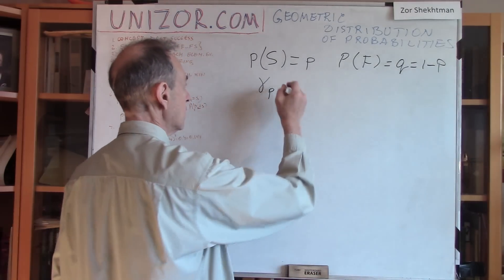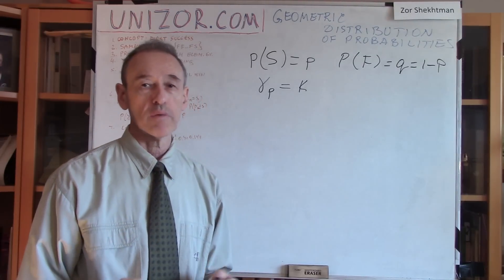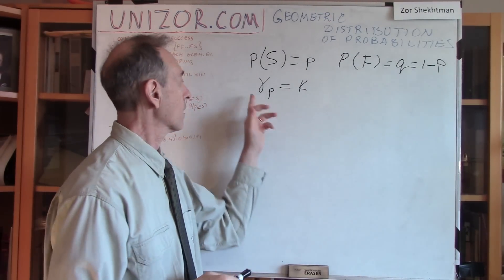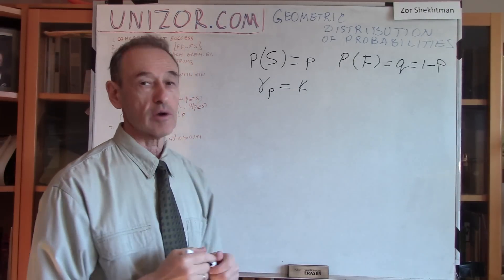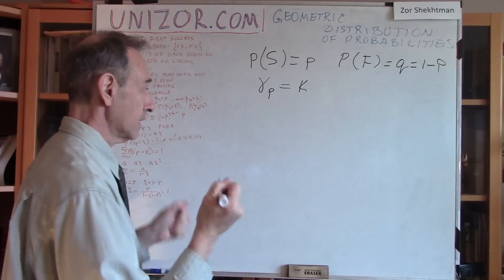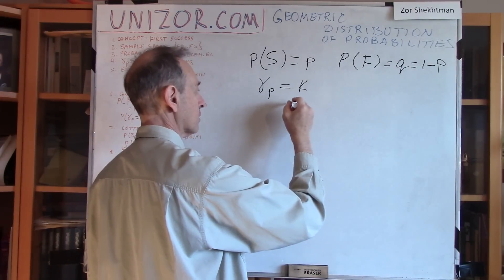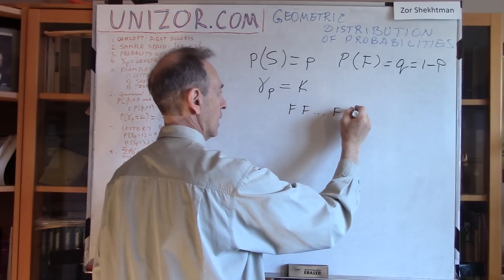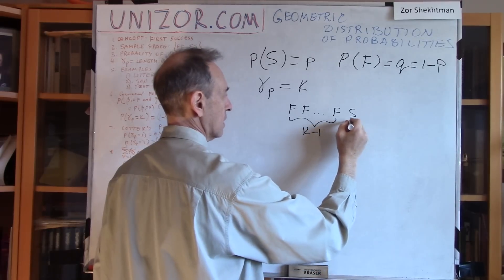So what is the probability of this particular random variable to take the value K? Well, this random variable, as you remember, is the length of an elementary event. So there is only one elementary event, which is F, F, F, S. K minus 1 F's and 1 S.